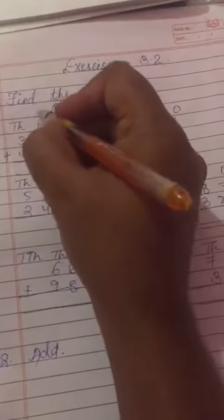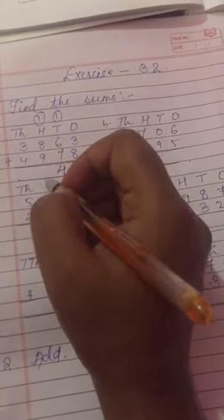1 humara carry ho gaya. 8 and 9, 8 and 9 humara ho jayega 17, 17 on 1, 18, 18 ka 8. 8, 1 hai mein carry.